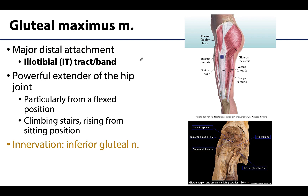The majority of its fibers have a distal attachment on the iliotibial or IT tract, also called the IT band. The IT tract is a thickened lateral portion of the deep fascia of the thigh called the fascia lata, interwoven with the flattened tendon of the gluteus maximus as well as another muscle called the tensor fasciae latae, or TFL, which we'll discuss in another section.